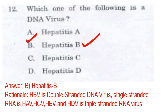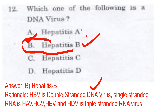Hepatitis B virus is a double-stranded DNA virus. Hepatitis A virus, Hepatitis C virus, and Hepatitis E virus are single-stranded RNA viruses. Hepatitis D virus is a triple-stranded RNA virus. So the answer is Hepatitis B virus — double-stranded DNA virus.